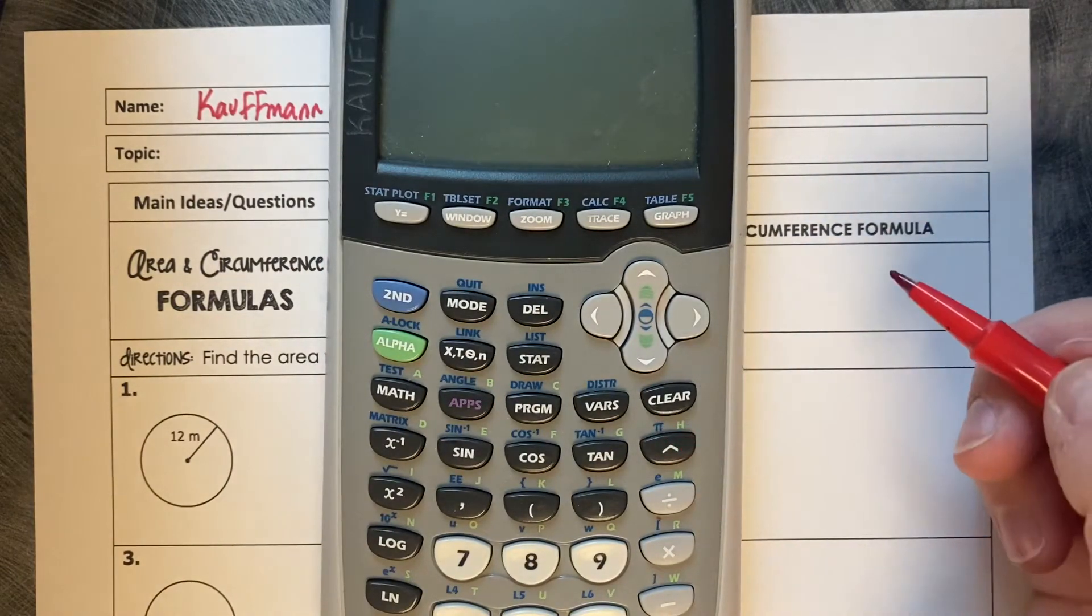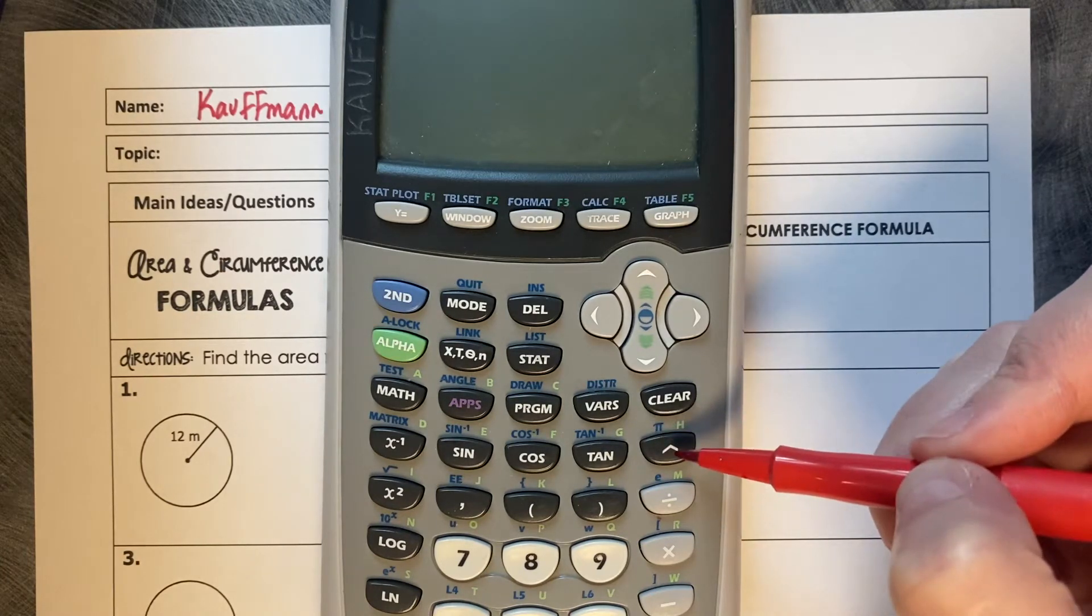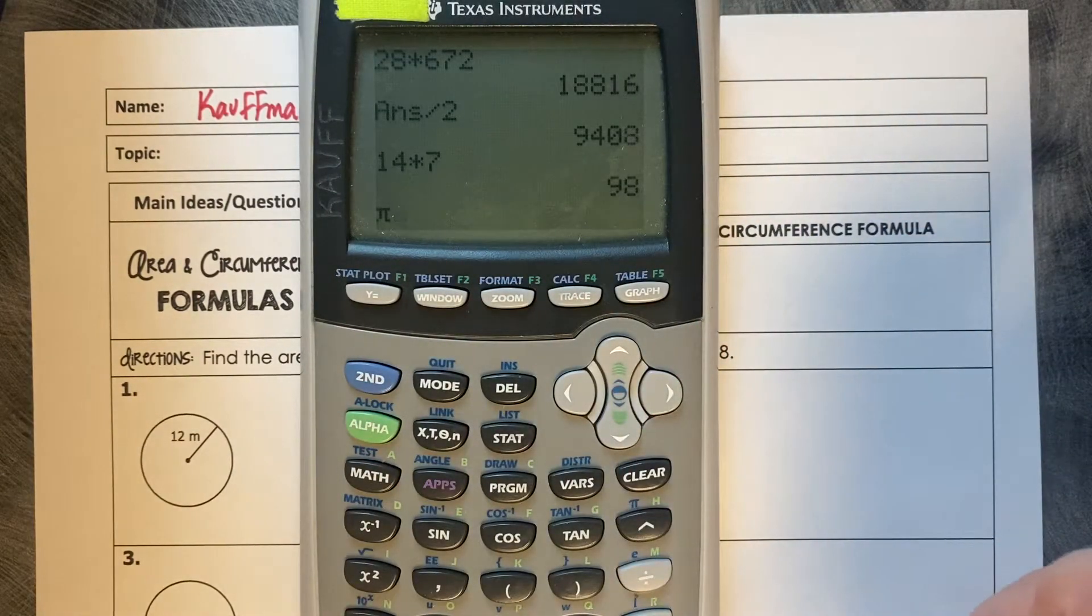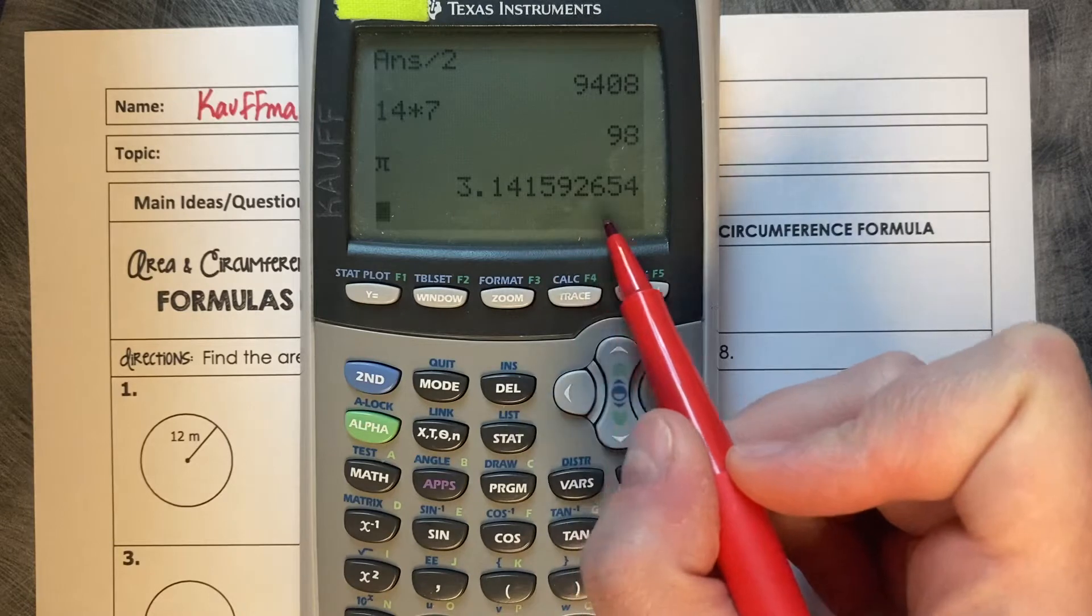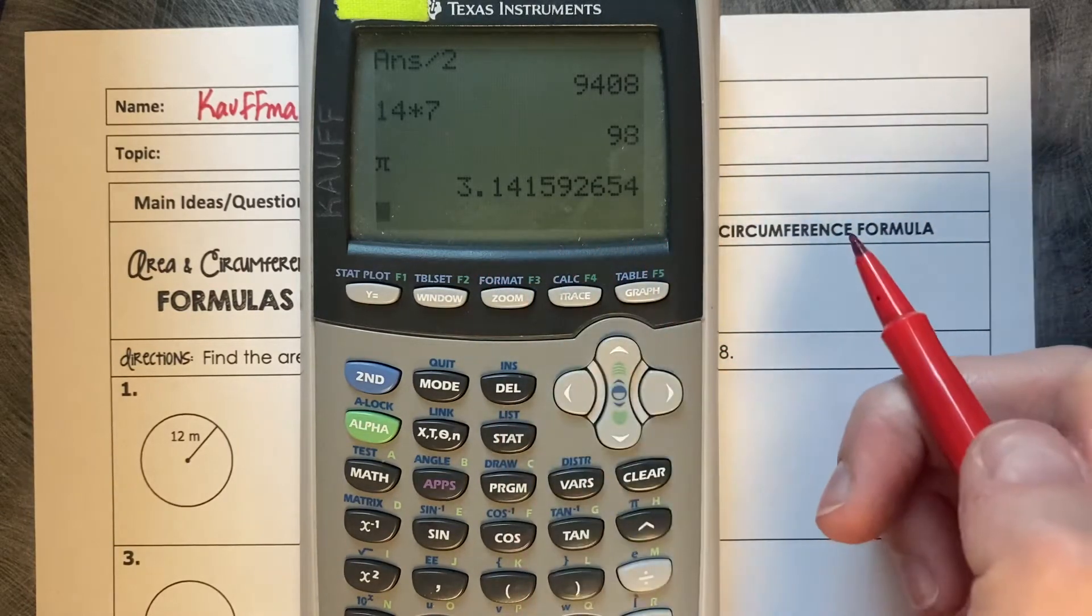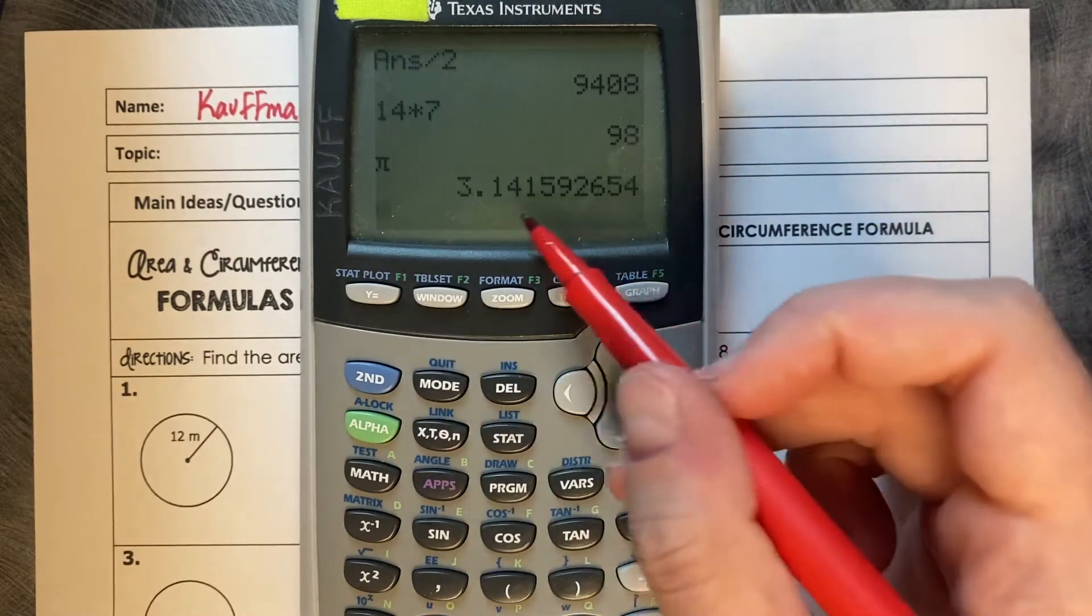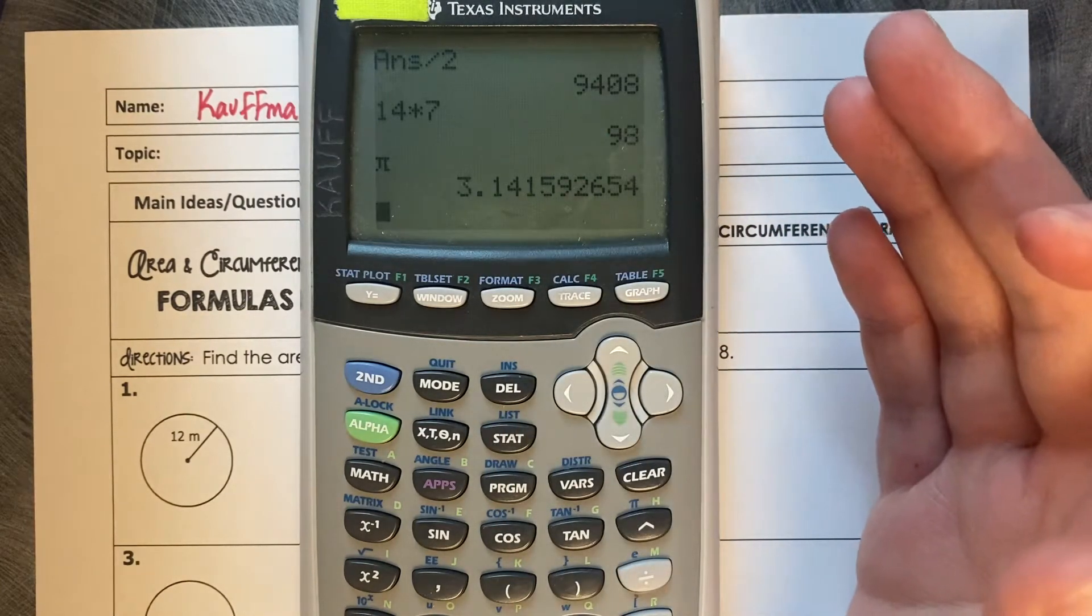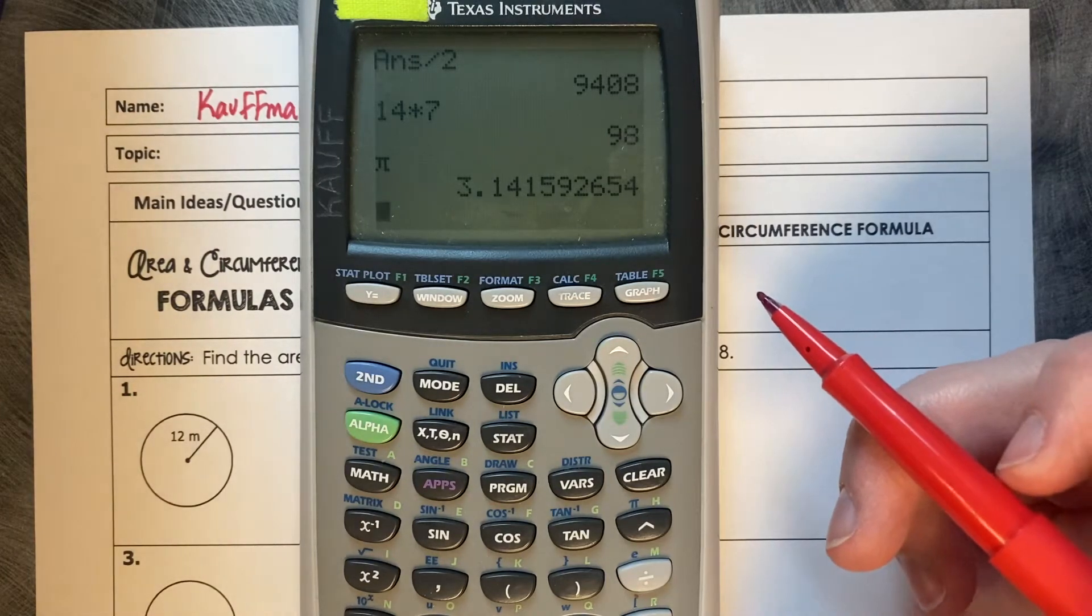On your calculator there is a pi symbol that we're going to start using. It might be buried in different spots on different calculators, but on a TI-83 or TI-84 it's above the caret. Anytime we're going to be using pi, I actually do want you to use the pi symbol. Pi is a repeating decimal that goes on forever, so it's not just 3.14, it has a lot more decimal places with it. If you don't use the pi symbol in your calculator you won't get all of the decimal places that you need in order to get the most accurate answer.